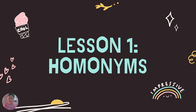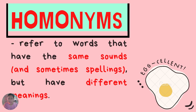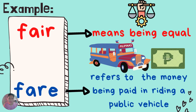What are homonyms? Homonyms refer to words that have the same sounds and sometimes spellings, but have different meanings. Example: fair and fair. Fair means being equal, while the second word fair refers to the money being paid in riding a public vehicle. Fair and fair are homonyms because they have the same sound but with different spelling and meaning.